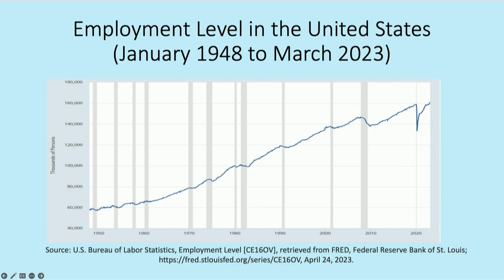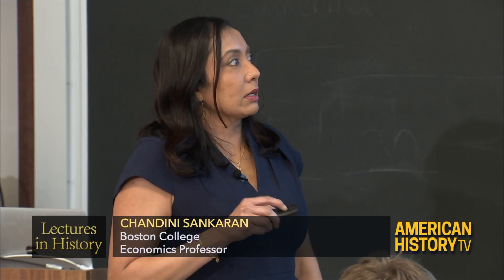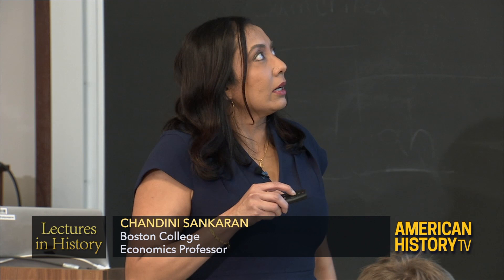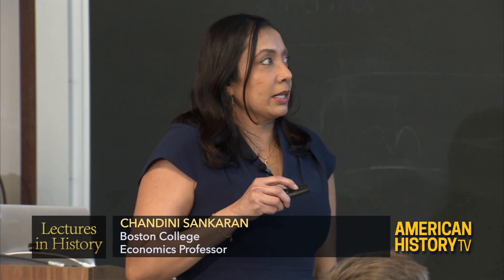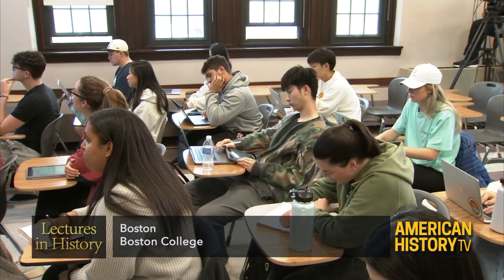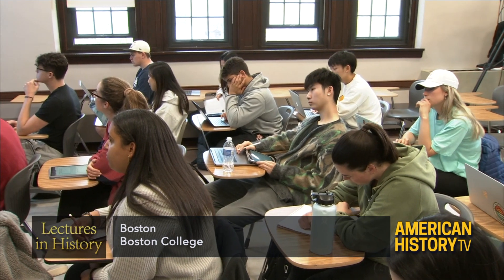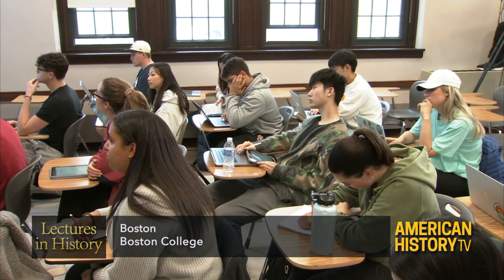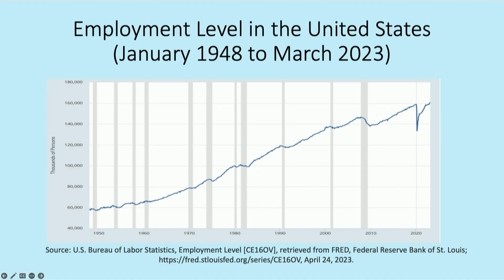This is a graph that shows us the employment level in the United States from January 1948 to March 2023, looking at thousands of persons employed. When we take a look at the long-term picture, you can see that the employment level in the United States has always been increasing. Yes, our population has been increasing as well, but so have jobs and so has the employment level.